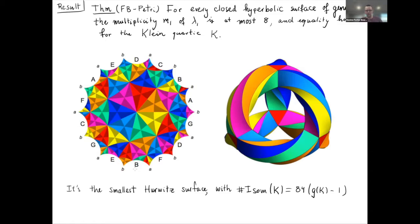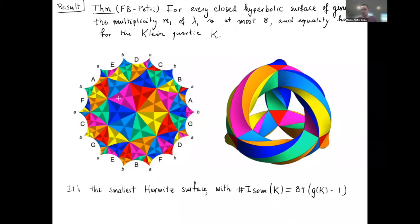The Klein quartic can be obtained by taking a certain 14-sided regular polygon in the hyperbolic plane with certain side identifications — side a is glued to a, b to b, and so on. Doing that gives a hyperbolic surface of genus three. It has the shape and symmetries of a tetrahedron in some sense, but it has many more symmetries: every colored triangle can be sent to any other by an isometry, and any small triangle can be sent to any other small triangle by a unique isometry of the surface.